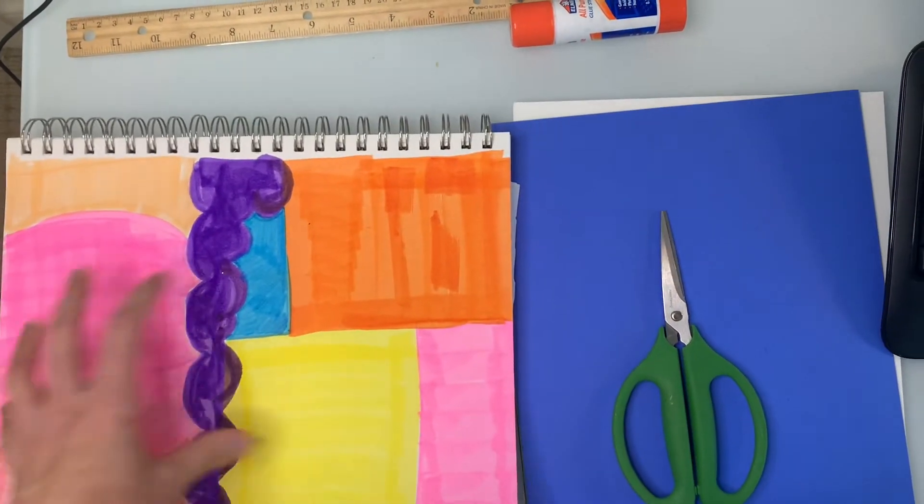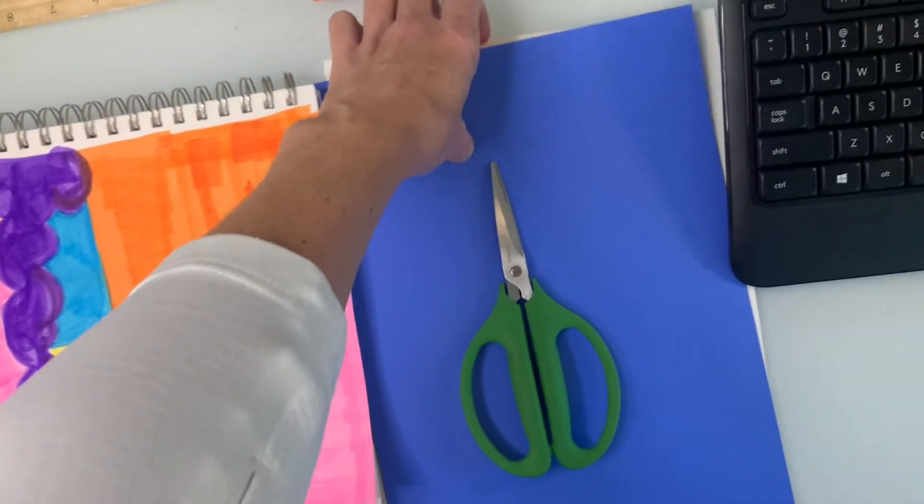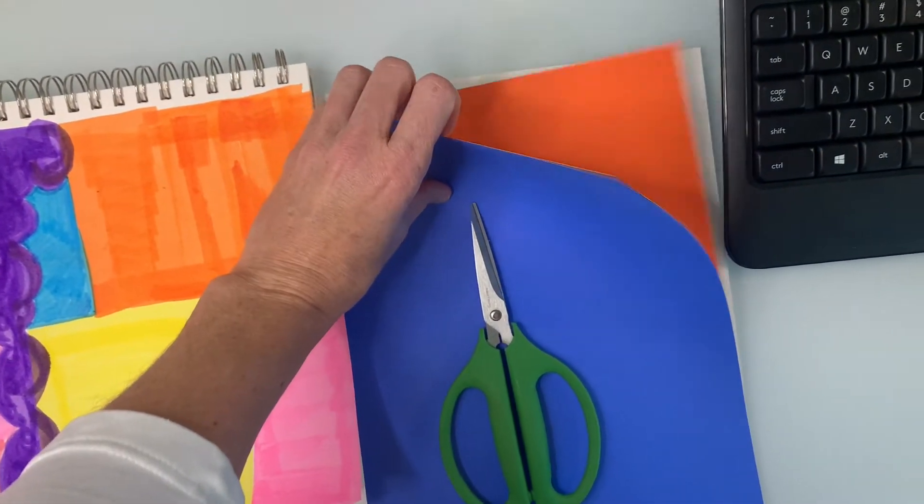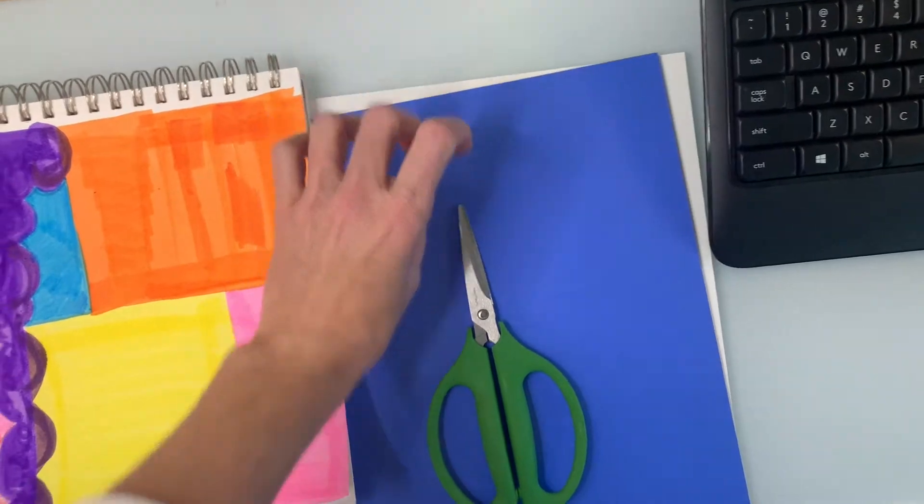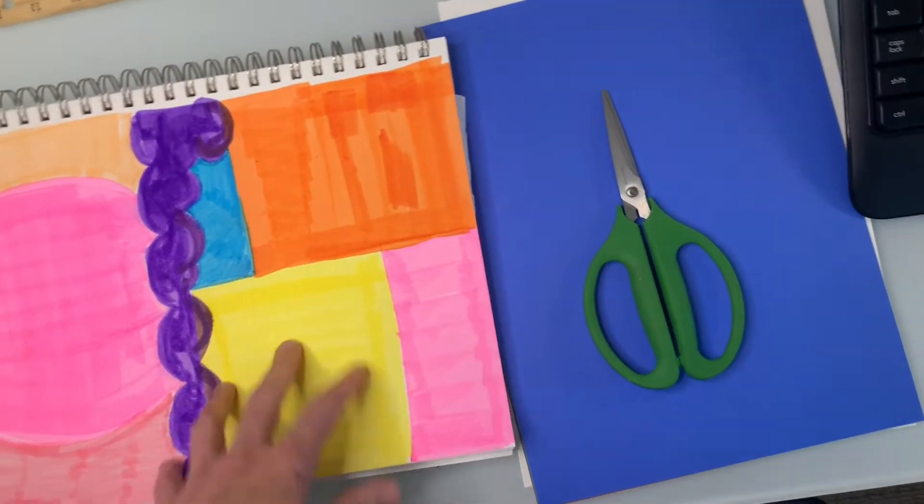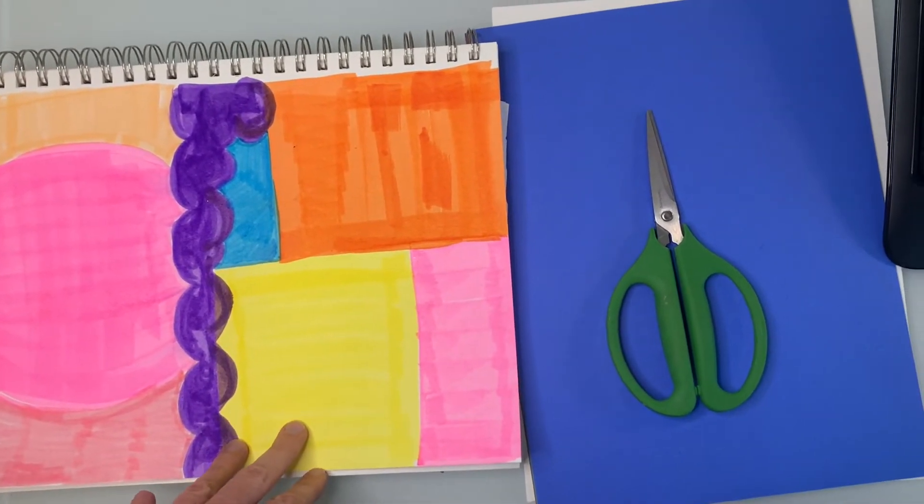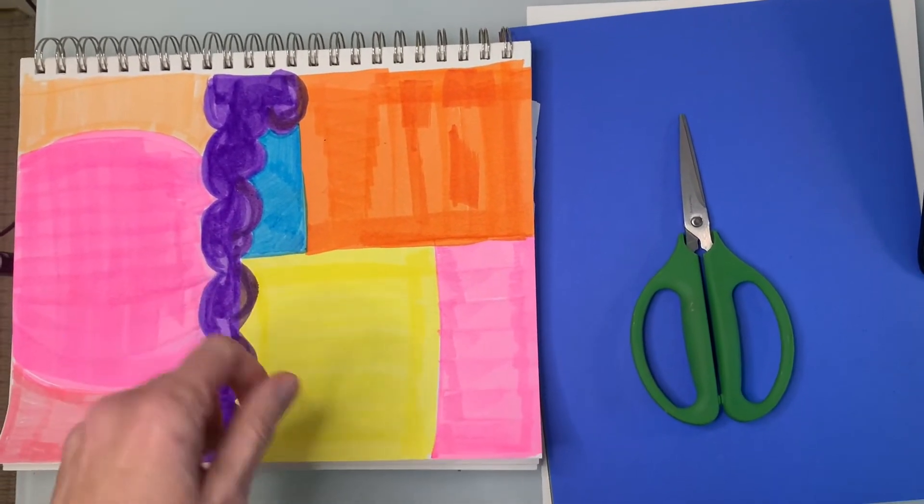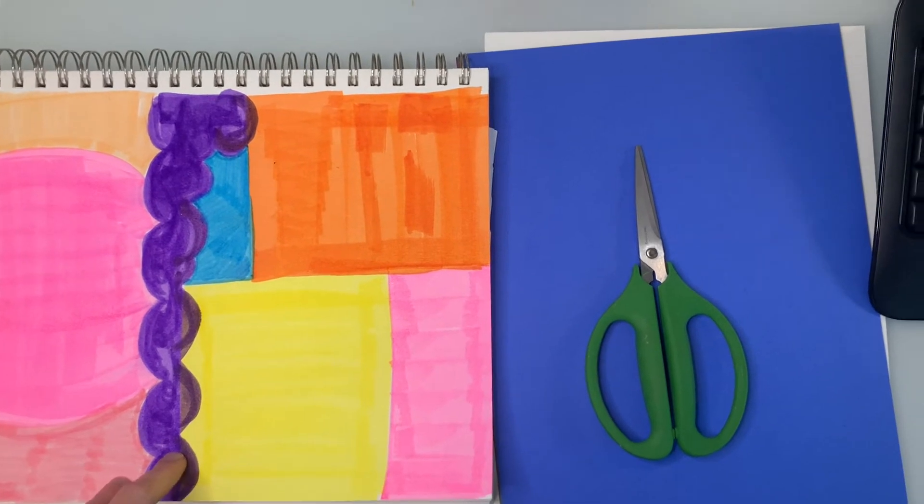I'm going to use this as my background. If you're at home and have construction paper in different colors, you can use those as your cutouts or cut big blocks and glue them as your background. There's lots of different ways you can do this, and I'm excited to get started.